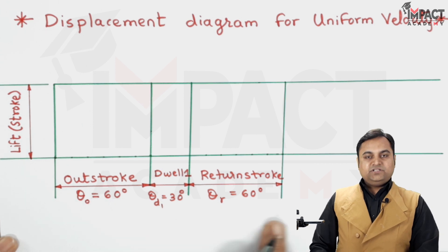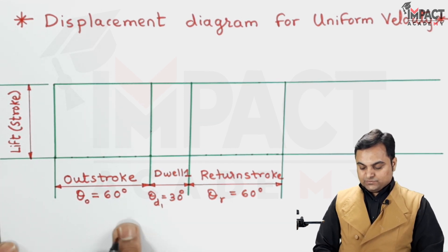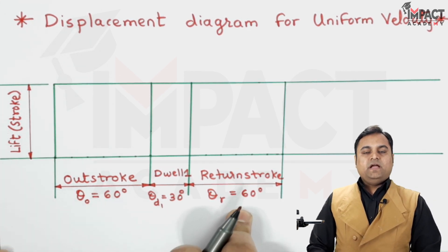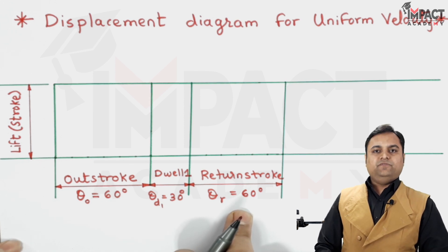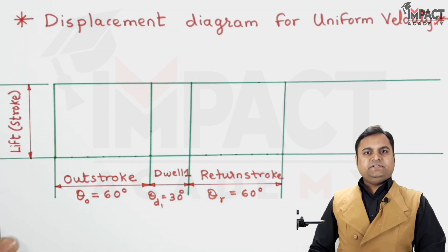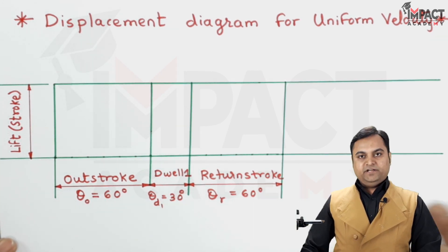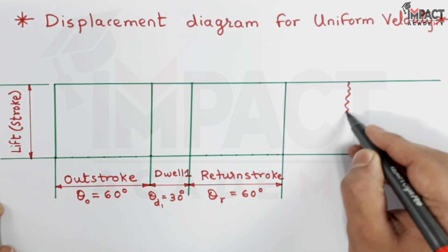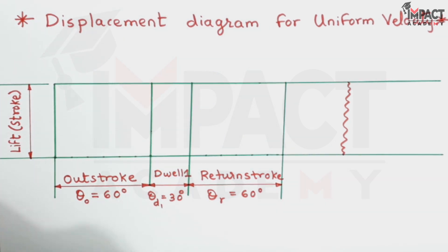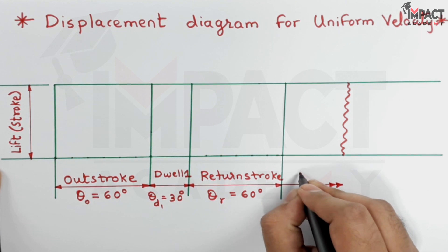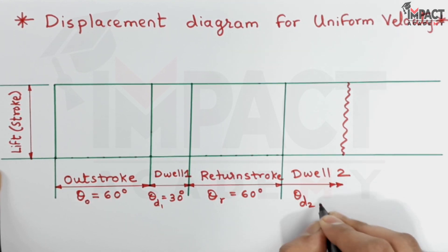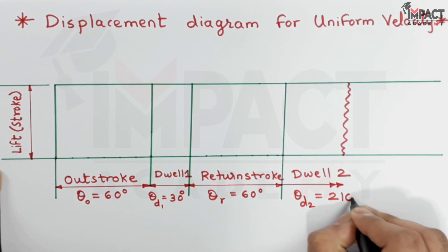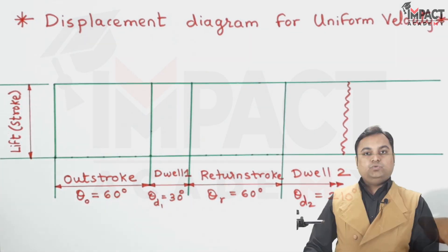Then when I add up these values it gives me the answer as 150 degrees, and out of 360 when we subtract 150, 210 remains. So that is the remaining dwell and for that I am just showing a broken section. And this would indicate the second dwell which is for the remaining degree of rotation, that is 210 degrees.